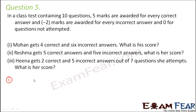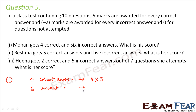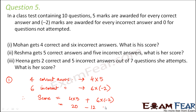For Mohan's score: he gave 4 correct answers, so for 4 correct answers the score is 4 into 5. For 6 incorrect answers, 2 marks are deducted each time, so it is 6 into minus 2. Therefore the total score of Mohan is 4 into 5 plus 6 into minus 2, which is 20 minus 12, equal to 8. Therefore Mohan's score is 8.